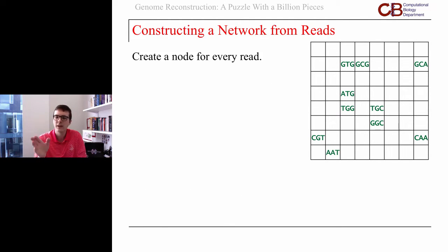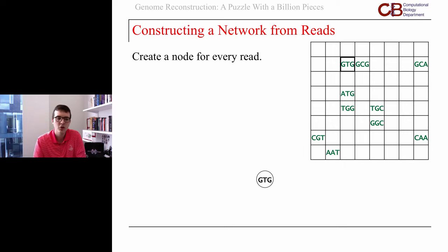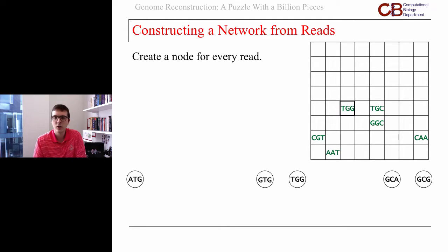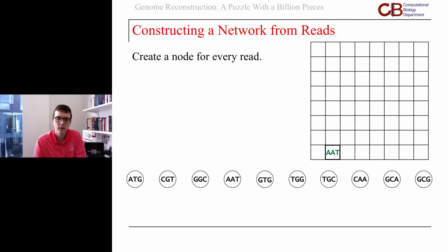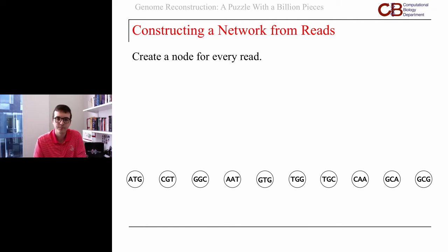We might say we've got ten reads for this example. Let's create a node for every single one of them. We can bring down and say GTG, GCG, GCA, and so on — going through that diagram left to right in no particular order. We wind up with ten nodes, one for each one of our reads.